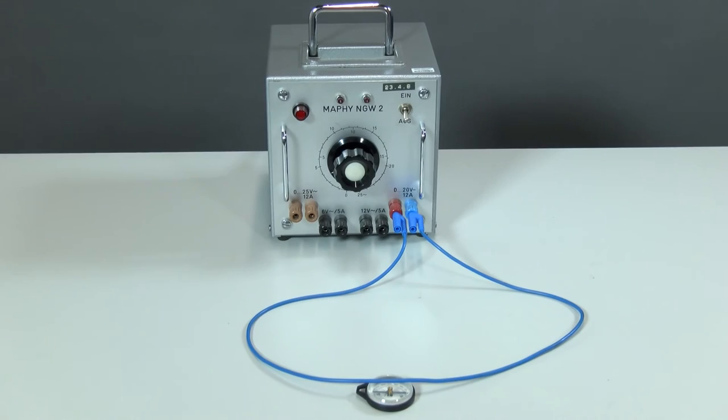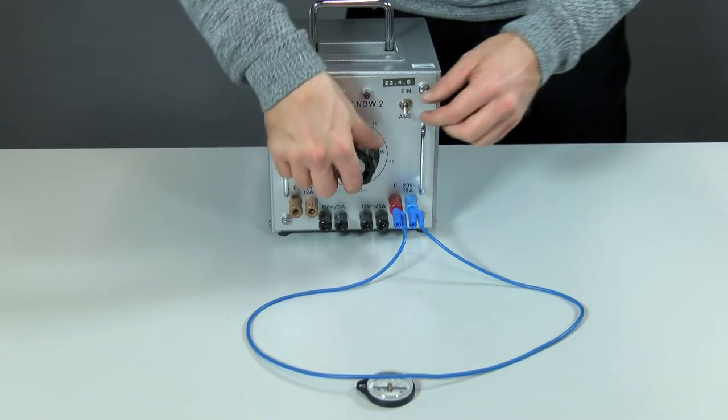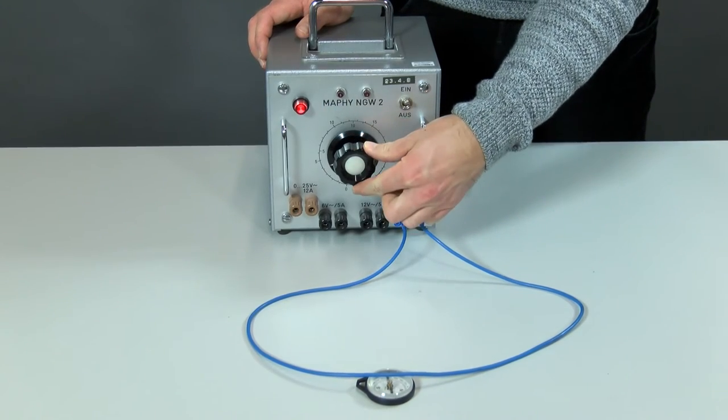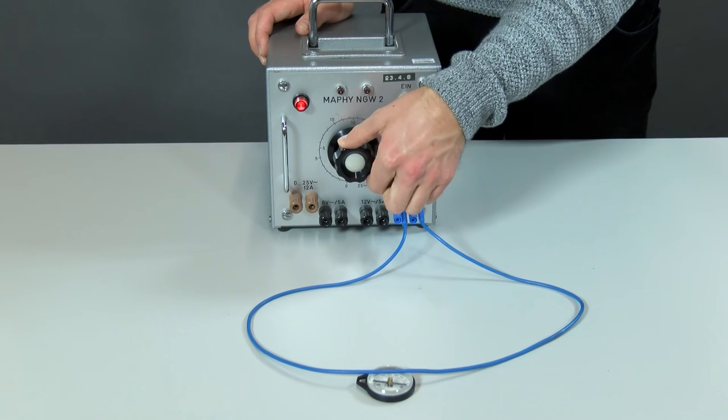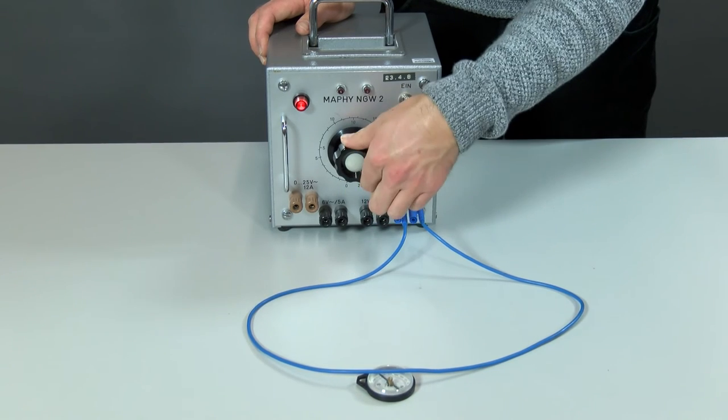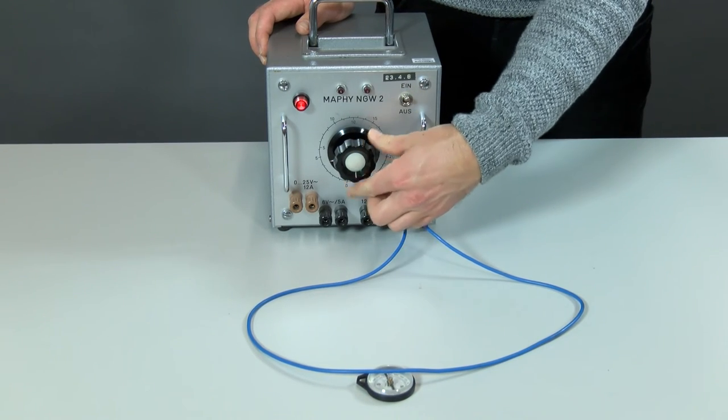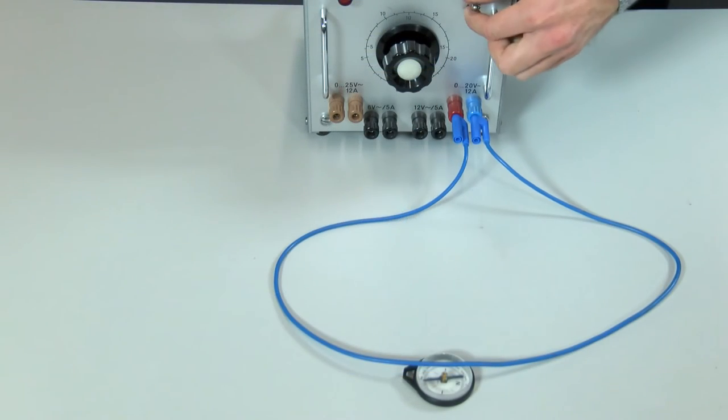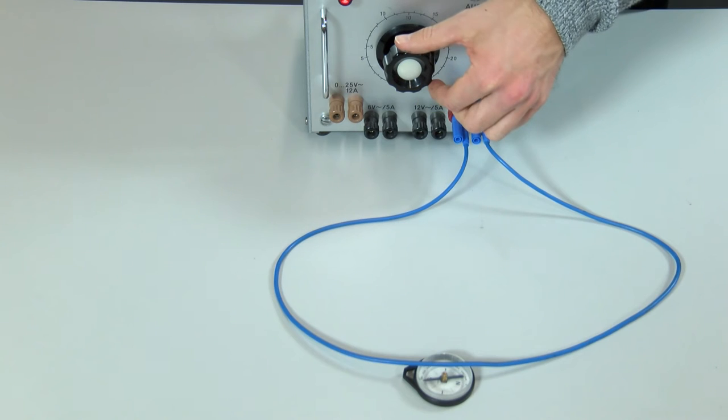Hi everyone, this video is about the connection between electricity and magnetism, the so-called electromagnetism. The Ørsted experiment can be used to show this connection experimentally. To do this, you place a compass under a power cable in such a way that the compass needle is aligned parallel to the power cable.